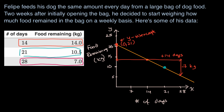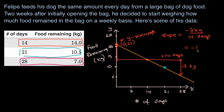Another question: how much is Felipe feeding his dog every day? We know every 14 days he feeds the dog seven kilograms. The slope equals the change in y over the change in x — that's negative seven kilograms over 14 days, which equals negative one half kilogram per day. So every day the food remaining goes down half a kilogram, meaning his dog eats half a kilogram a day.